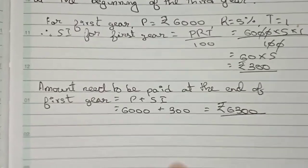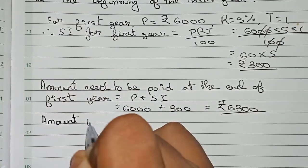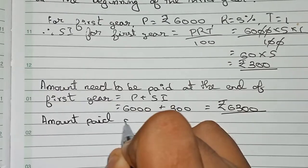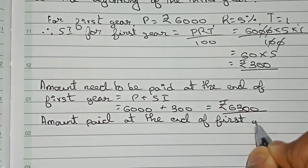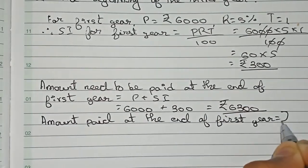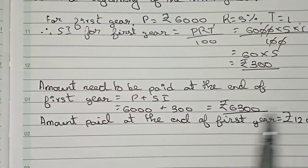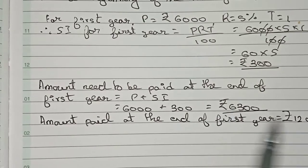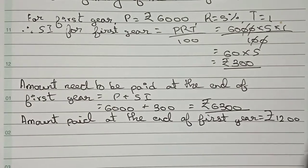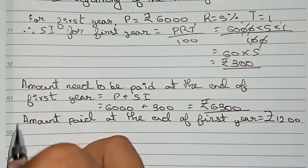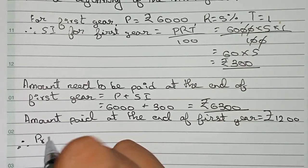The amount paid at the end of the first year is given as rupees 1200. This means that the full amount is not paid — only 1200 is paid. So therefore we can write that the principal for the second year is determined by subtracting the amount paid from the amount due.